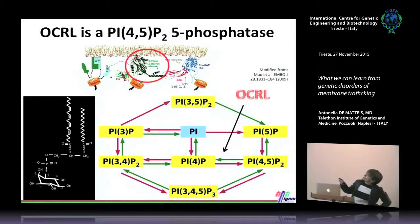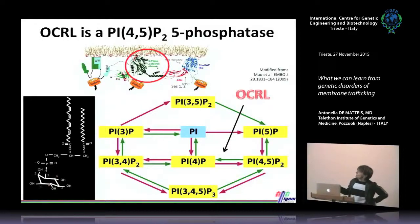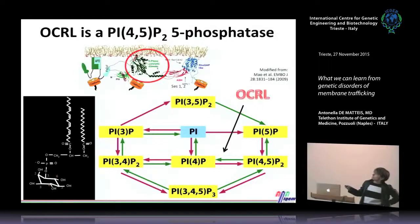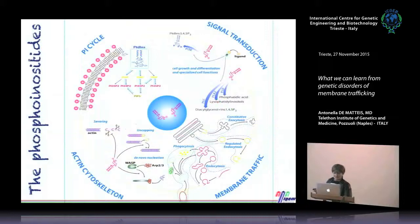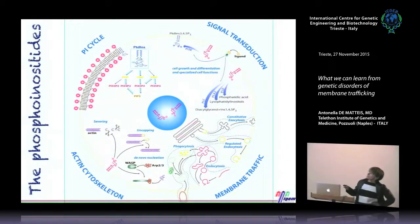What OCRL does with its catalytic domain is to remove the phosphate at position 5 from PI(4,5)P2, bringing it back to PI4P — a simple reaction. But why is that so important? Because phosphoinositides control many important functions in our cells, including membrane trafficking, cytoskeletal remodeling, and signaling.